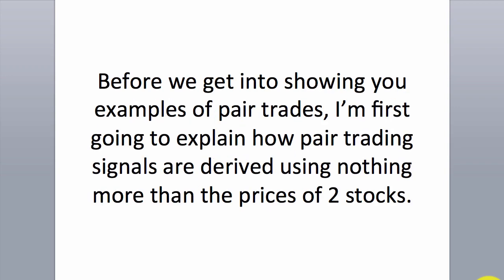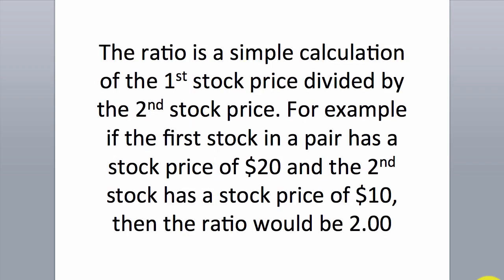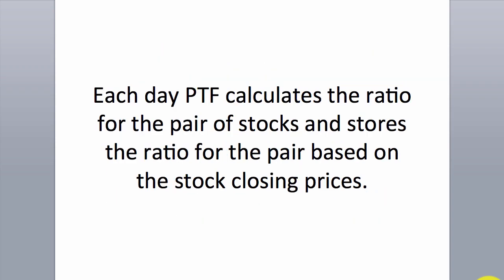Before we get into showing you examples of pair trades, I'm first going to explain how pair trading signals are derived using nothing more than the prices of two stocks. To measure the relationship between two stocks, PTF creates what's known as the ratio between two stocks. The ratio is a simple calculation of the first stock price divided by the second stock price. For example, if the first stock has a price of $20 and the second stock has a price of $10, then the ratio would be 2.0. Each day, PTF calculates the ratio for the pair of stocks and stores it based on the stock closing prices.